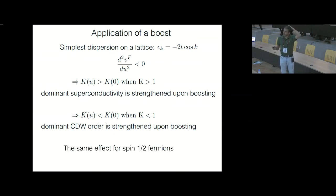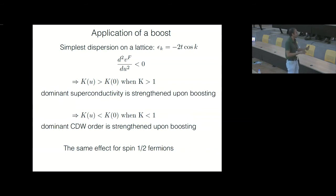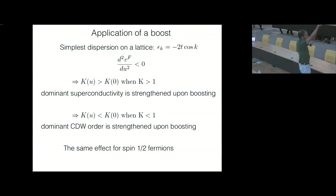We've been talking about spinless fermions — it turns out this is also true for spin-half fermions. You might wonder whether this can happen indefinitely, because it doesn't make sense for the superconductivity to keep getting strengthened as you increase the boost — then there would be no meaning to a critical velocity. What happens is that as you increase the boost, the asymmetry between the left movers and right movers starts getting larger and larger, and at some point one of them is going to reach the bottom or top of the band, where you can't linearize anymore.